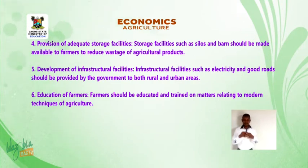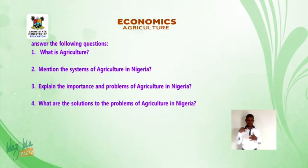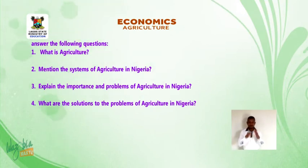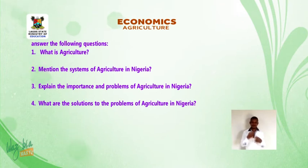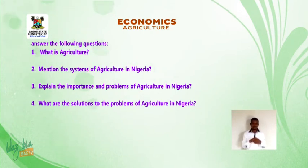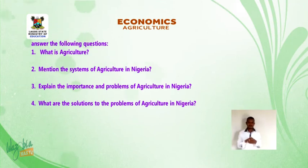With this, we have come to the end of our lesson on agriculture today. I would like you to go home and revise everything we have done and also answer the following questions: 1. What is agriculture? 2. Mention systems of agriculture in Nigeria. 3. Explain the importance and problems of agriculture in Nigeria. 4. What are the solutions to the problems of agriculture in Nigeria?